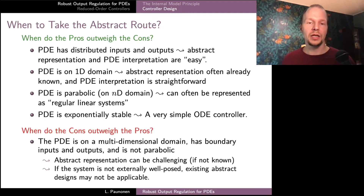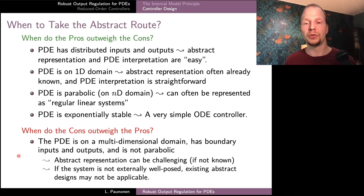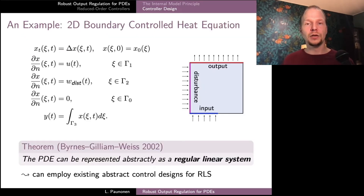On the other hand, there are situations where working directly with the individual PDE is recommended — especially for boundary control and observation of a PDE with a multidimensional spatial domain that does not belong to the class of parabolic systems. In that situation, finding the abstract representation can be very challenging. Also, if the system is not externally well-posed, there may be no abstract results applicable. With that said, we can now consider a particular PDE example to see how the abstract approach works in practice.